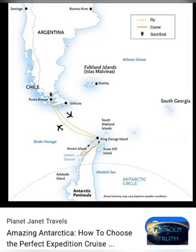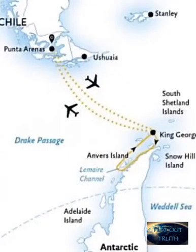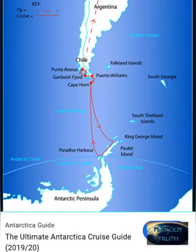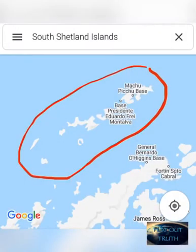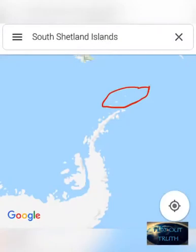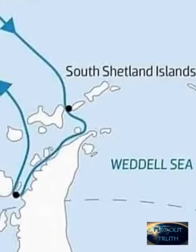Here we have the flight and cruise route for a tour to Antarctica from Planet Janet Travels. Now let's switch over to this map of the route so you can see the names. It leaves out of Cape Horn, goes past the South Shetland Islands along the Antarctic tail, and then back up. This right here would be the South Shetland Islands on Google Maps, and then of course there's the little tail of Antarctica.